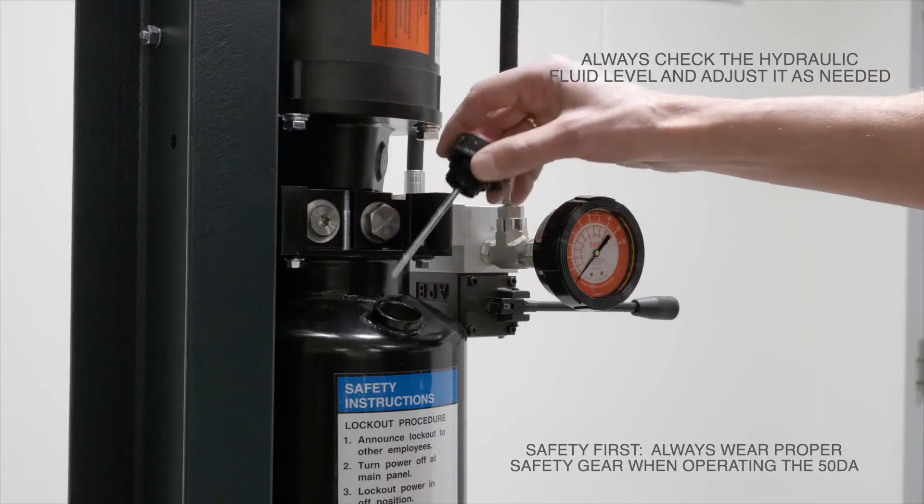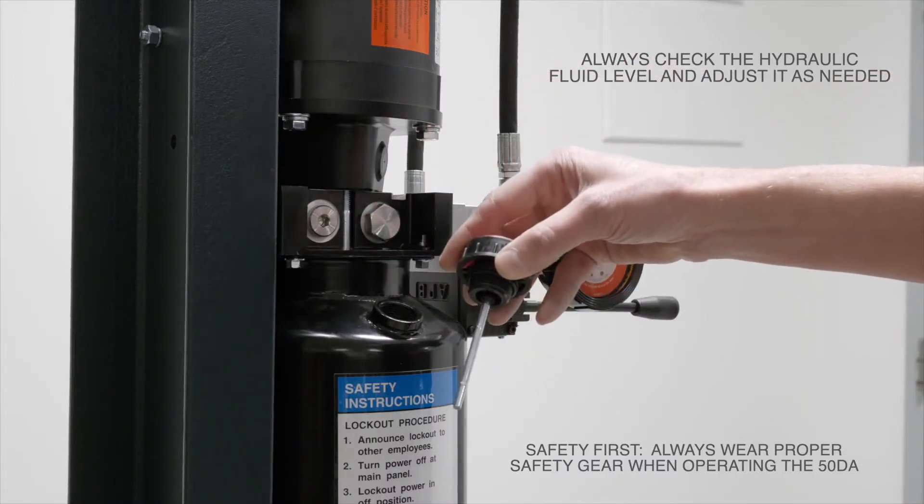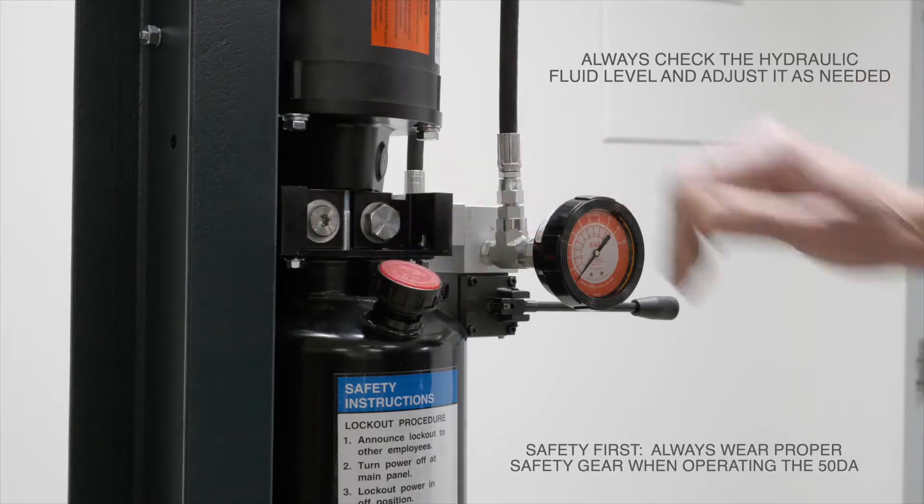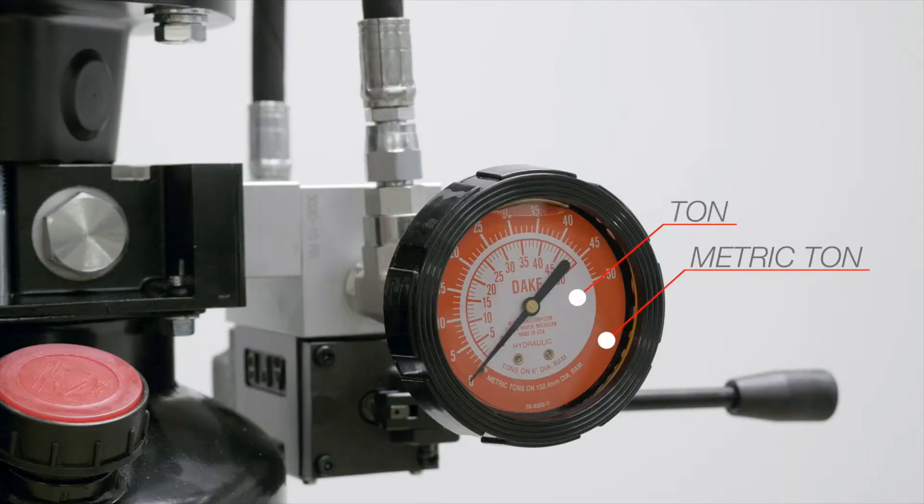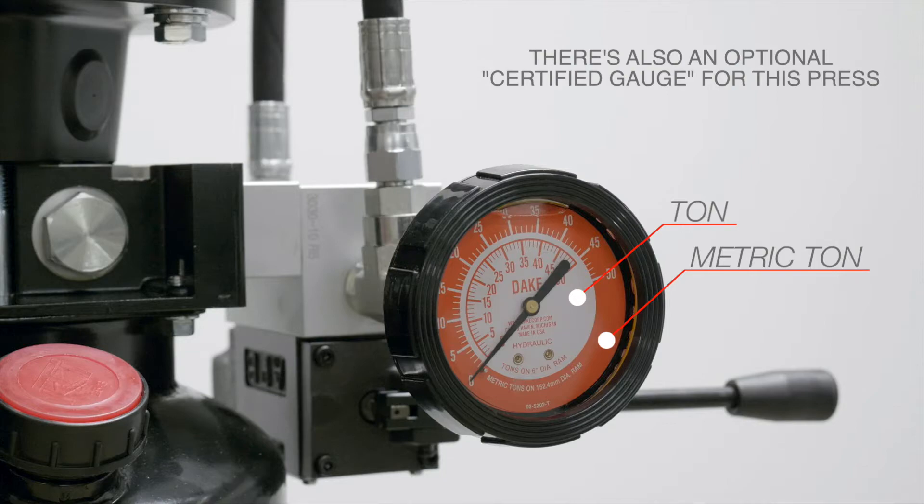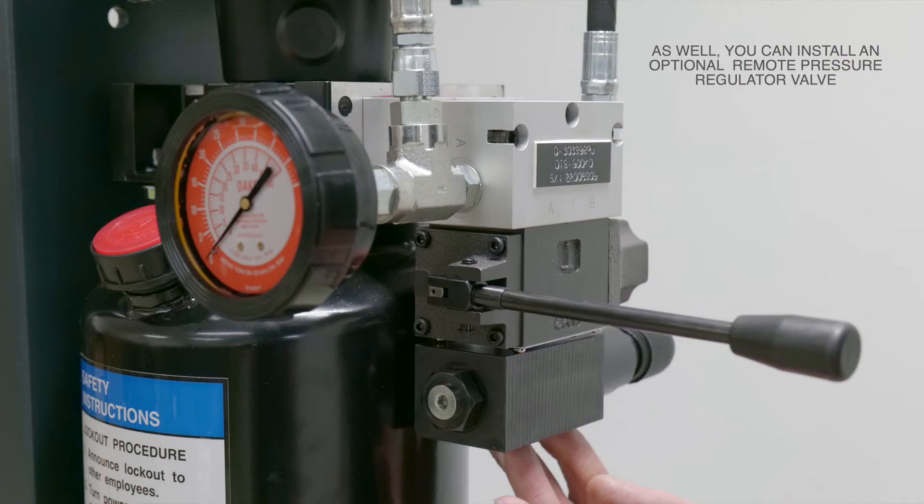Always check the hydraulic fluid level and adjust it as needed. Here you can see the gauge with both ton and metric ton indicator, and there's also an optional certified gauge for this press.